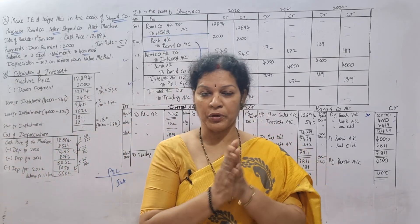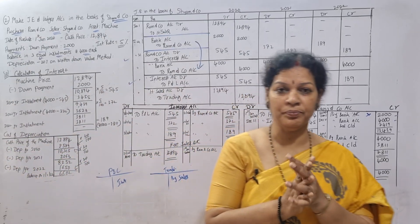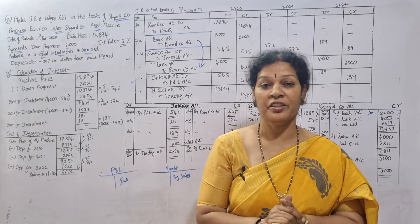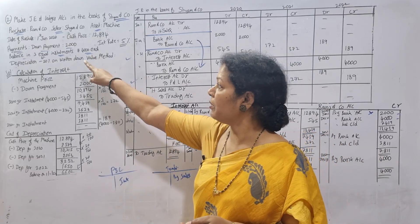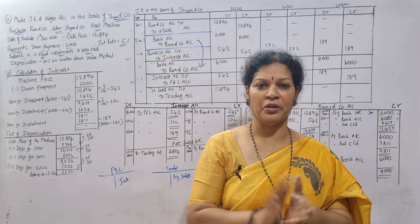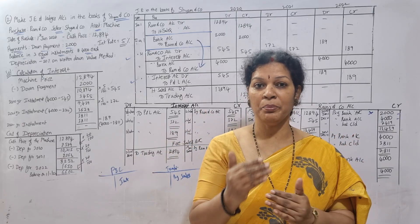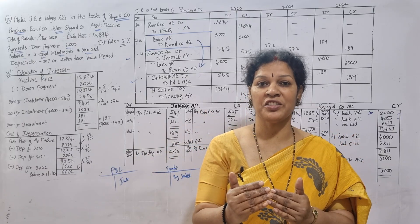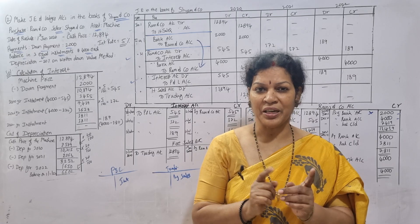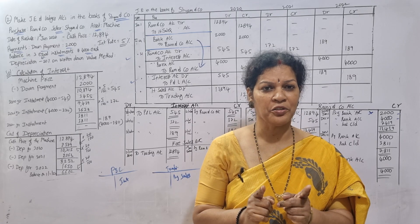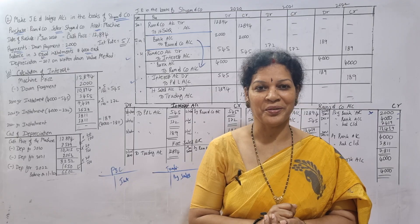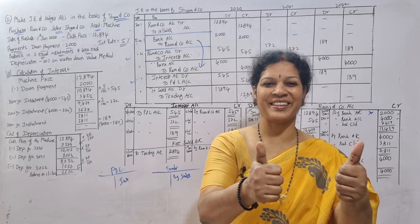In the next class we will work out a problem where the installment amounts are different. In this problem the installment was 4,000 — the same every year. Next class we will see how to work out the problem when the installment amount changes. Stay connected, check out the playlist, share this video, practice well, and good luck.